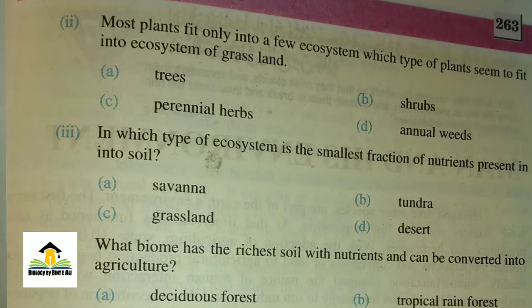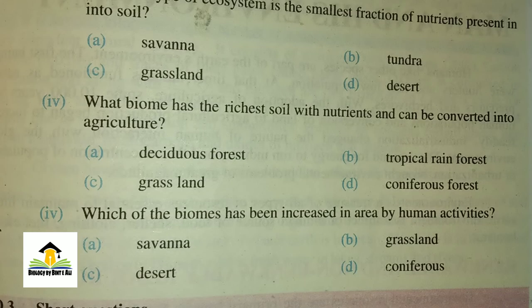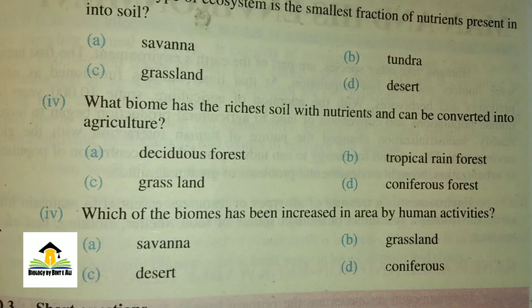MCQ number four: Which biome has the richest soil with nutrients and can be converted into agriculture? A) deciduous forest, B) tropical rainforest, C) grassland, D) coniferous forest. The right answer for this MCQ is C, grassland.